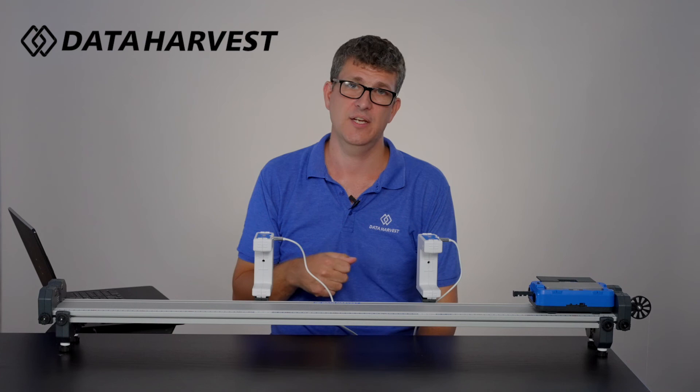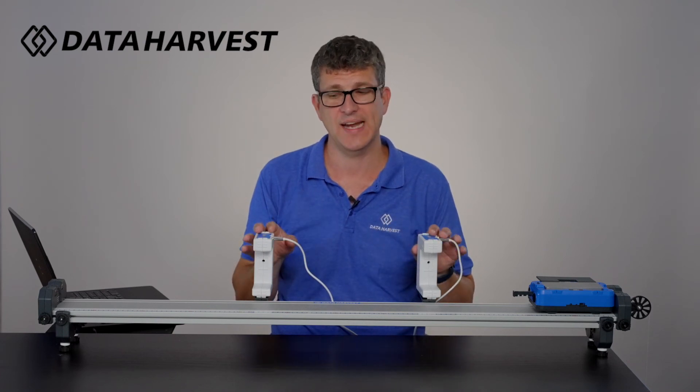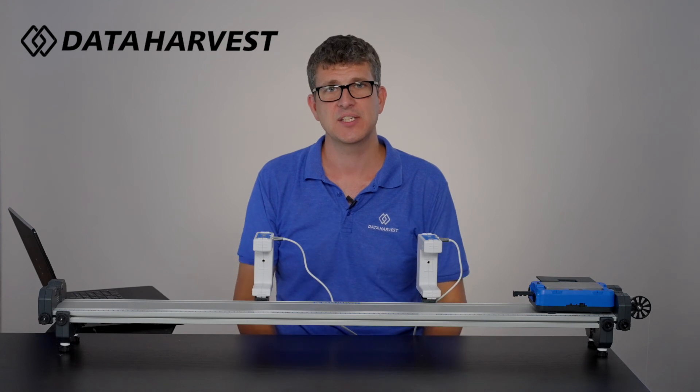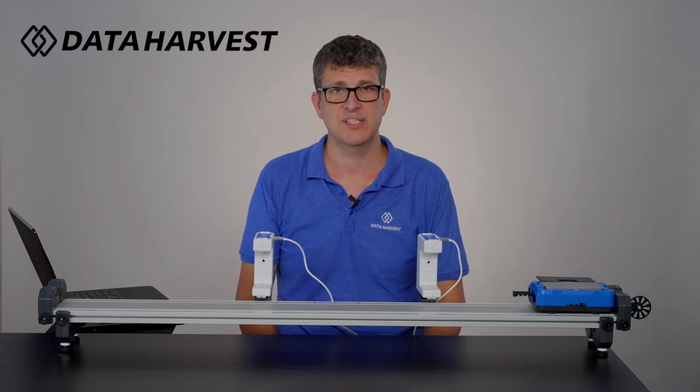There are lots more videos on all of the product pages for our wireless sensors as well as on our secondary academy. Please go to the drop down menu teaching on data-harvest.co.uk. Click on the secondary academy and then there's three sections for the videos. The first section is how the bluetooth sensors work. The second section is how you use them in the experiments. And the third section is how the EasySense 2 software works.